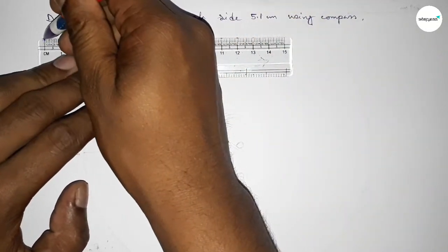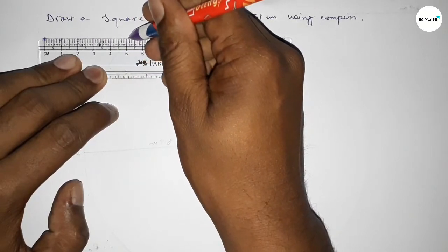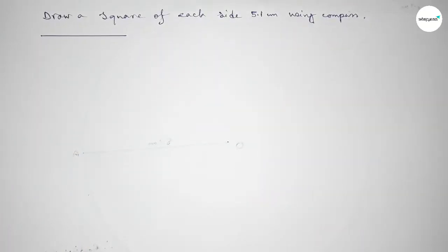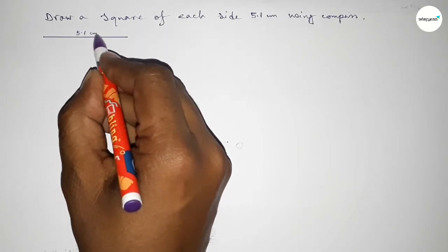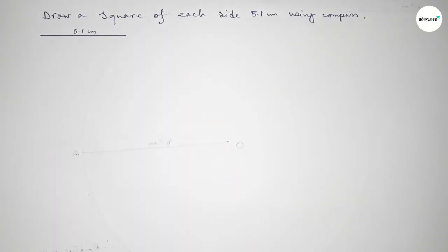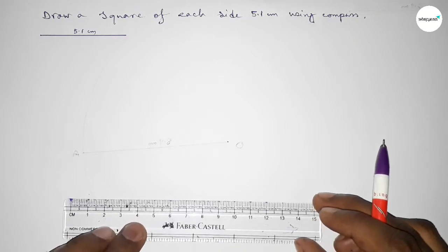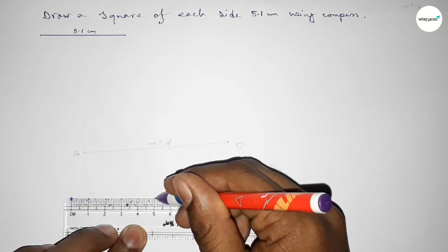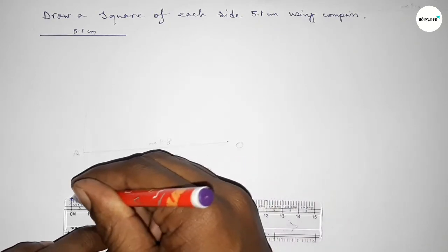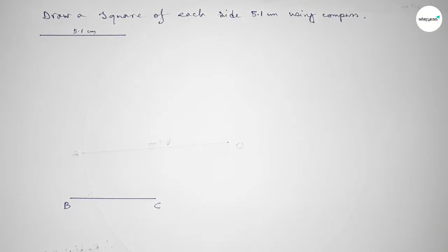First of all, we have to draw a line of length 5.1 centimeters — 0, 1, 2, 3, 4, 5, and this is 5.1 centimeters. Then again we draw another line of length 5.1 centimeters. Taking here point B and here point C.